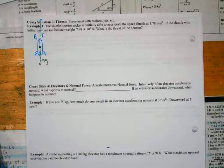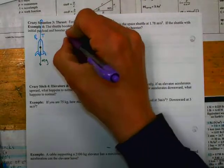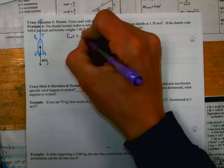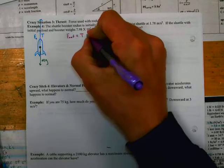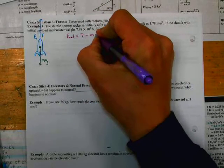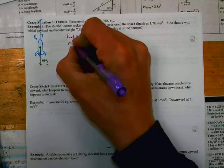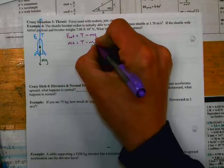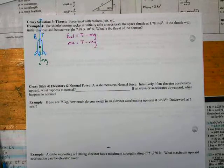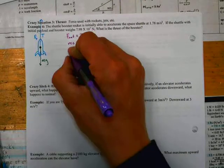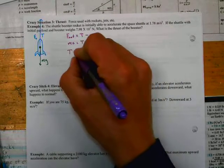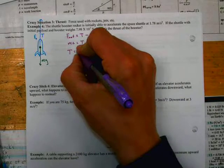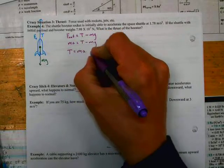Let's do the N2L. And we'll say F net on the rocket is equal to the thrust minus the MG. Alright, then we can say MA is equal to the thrust minus MG. Okay, and if we want to solve for the thrust, we can add MG to the other side. I'm going to kind of rearrange it so it says MA plus MG.